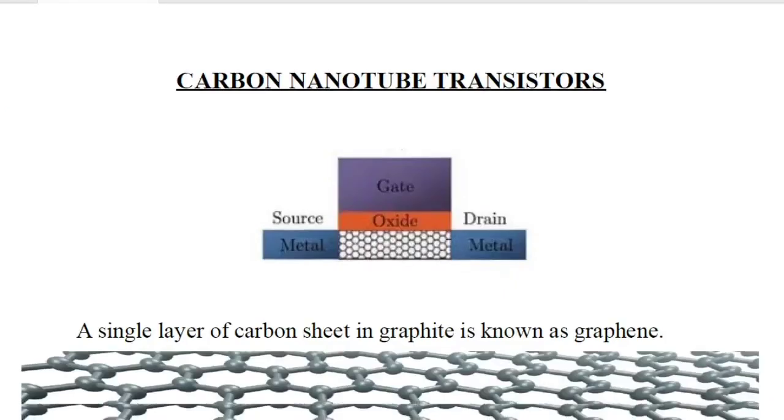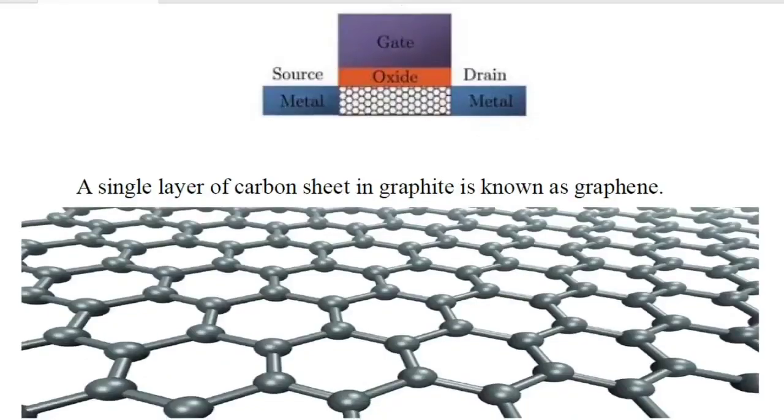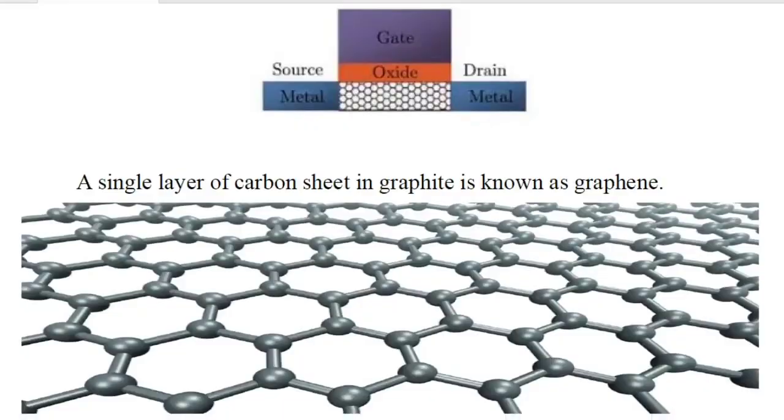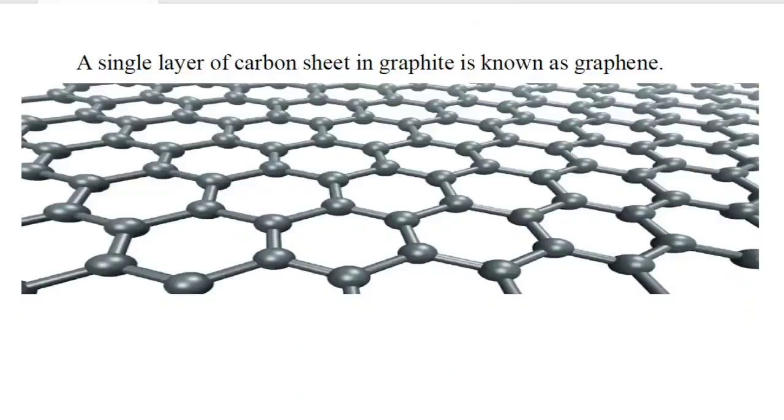The typical metals used to form source and drain are tin, nickel, aluminum, and gold.